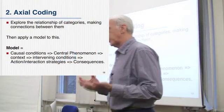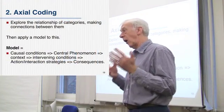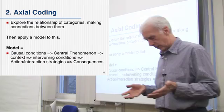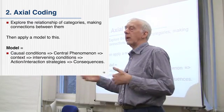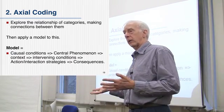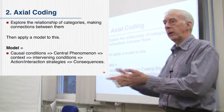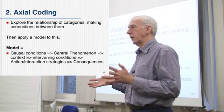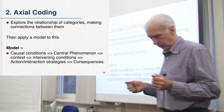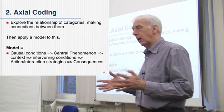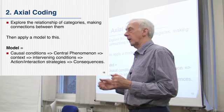That's the first stage that Strauss and Corbin talk about when you're doing grounded theory: the open coding stage. You would normally go through all the texts you've got and code them up in that kind of fashion. So you've now got a completely coded set of data by the end of open coding. It's not final coding, but everything has been looked at — there's nothing left out.